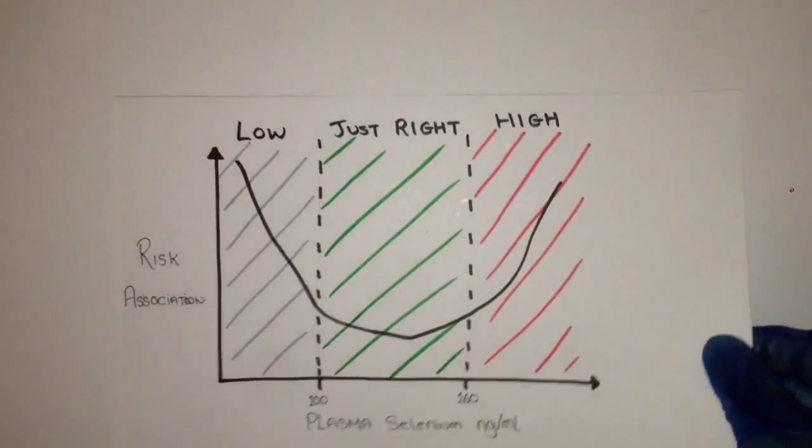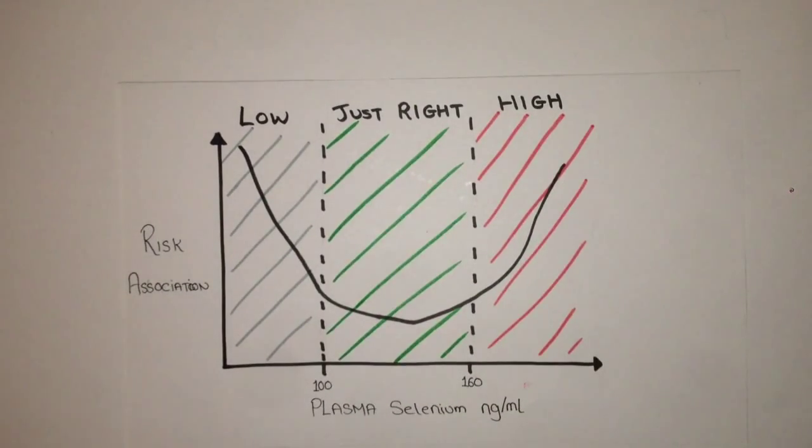Excessive intake of selenium leads to a disease called selenosis, which is characterized by a garlic odor on the breath, damage to hair and nails, with extreme cases leading to death.